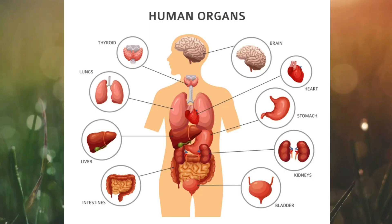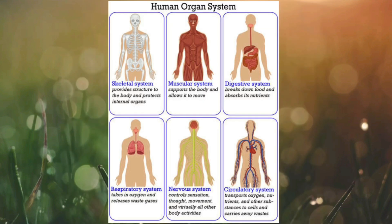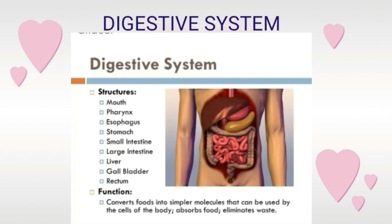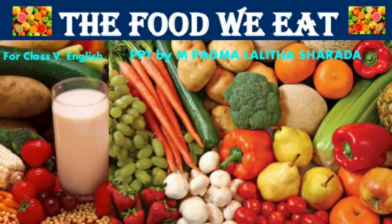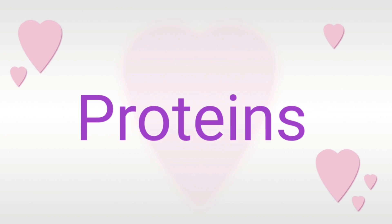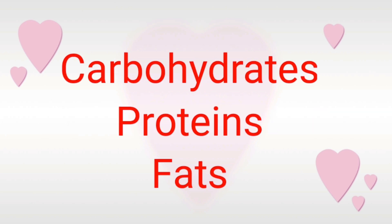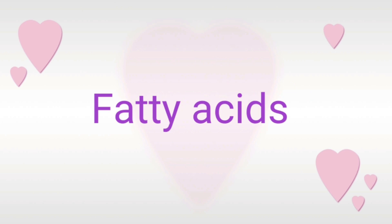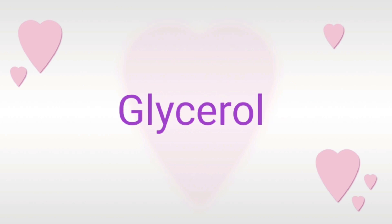Different organs together form an organ system. Let us first study about the digestive system. The food we eat consists of complex compounds like carbohydrates, proteins and fats. They have to be converted into simpler molecules like glucose, amino acids, fatty acids and glycerol respectively.